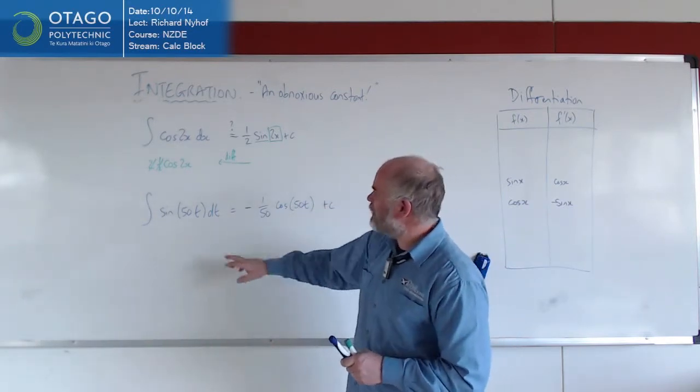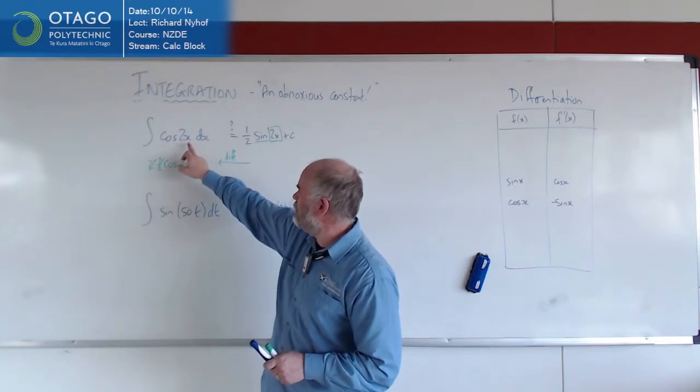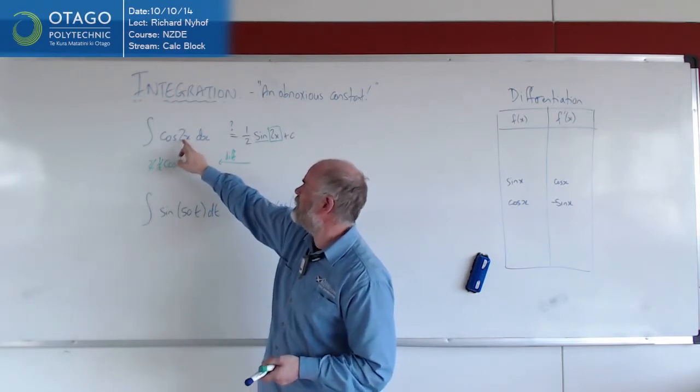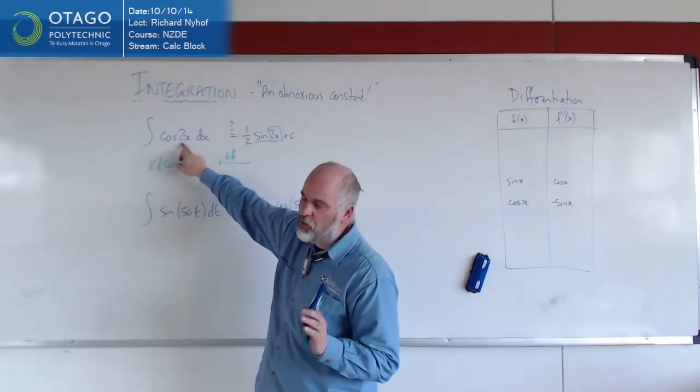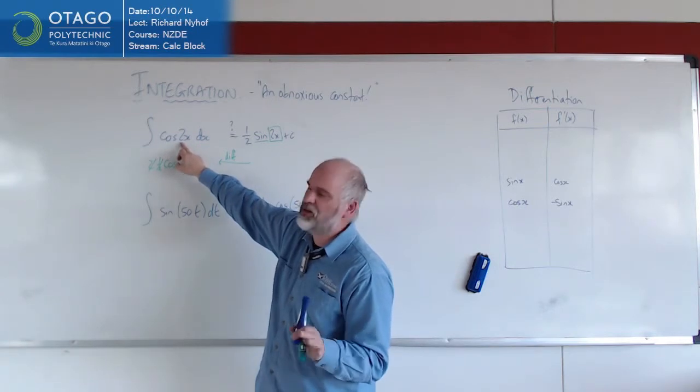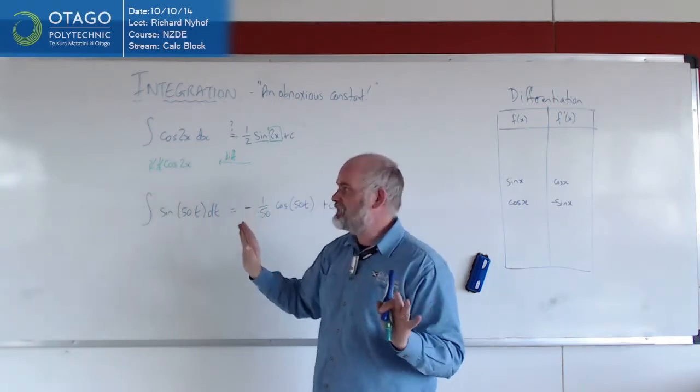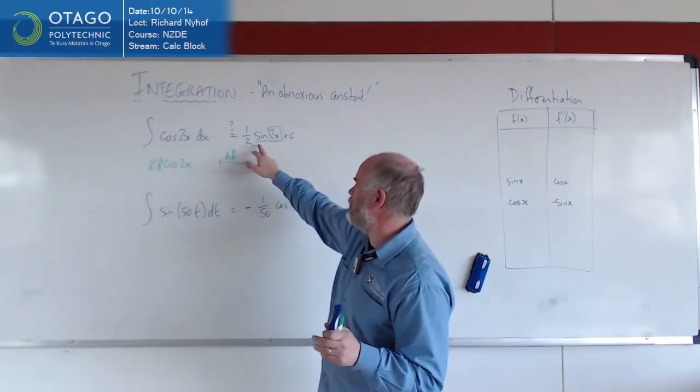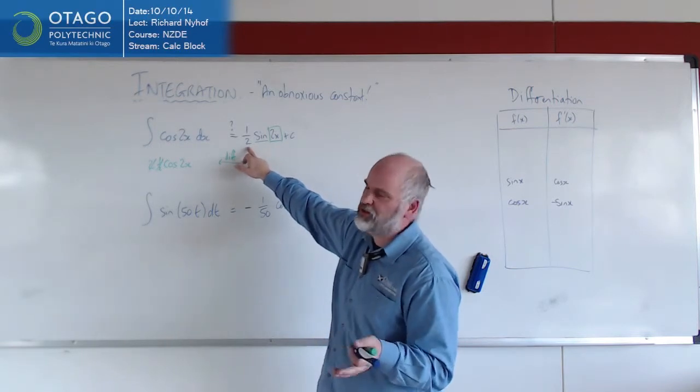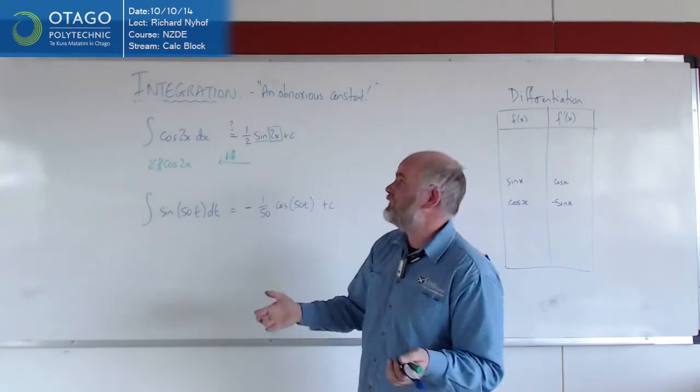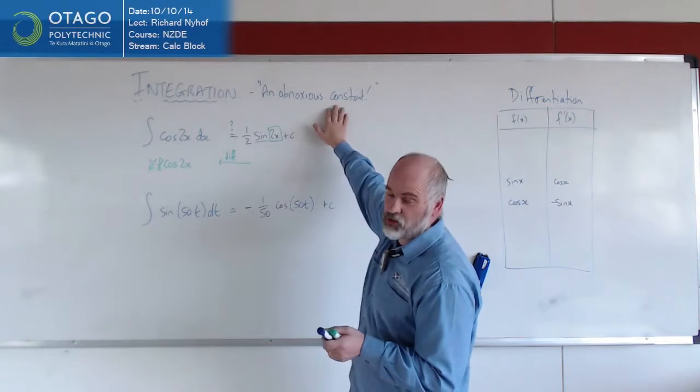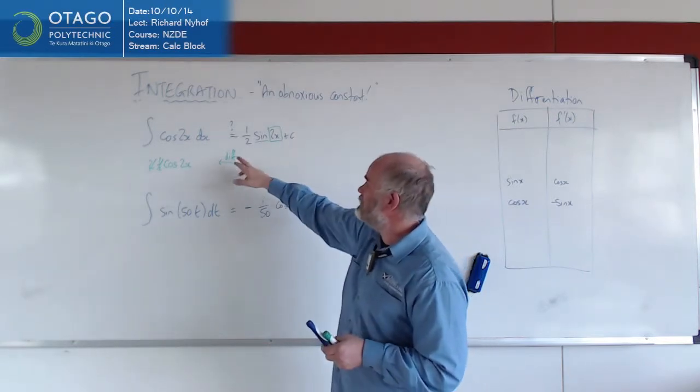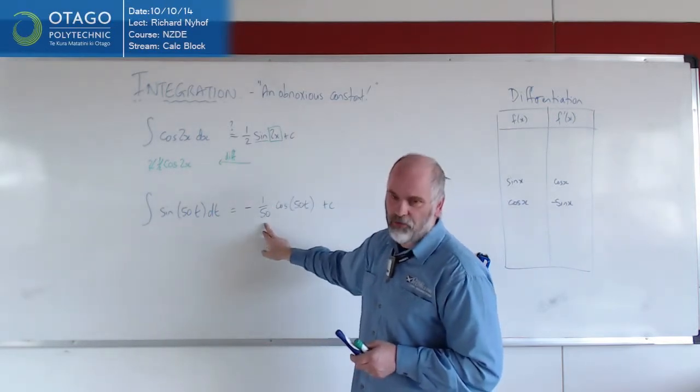So basically, if inside the function, you've got the variable you're dealing with multiplied by a constant. This only works if it's multiplied by a constant. If I had another x in there or something, that'd be a disaster, because when your chain rule came back, you wouldn't have a constant, you'd still have an x in it, you'd have a product rule, and it would all turn to custard. But if it's just an obnoxious constant, then you can deal with it by dividing through by it.